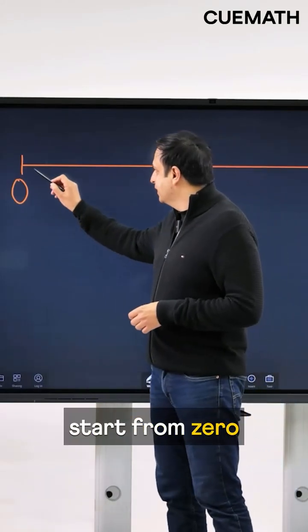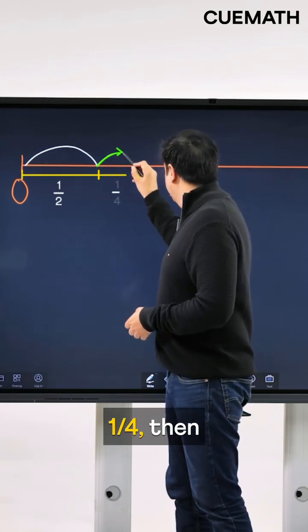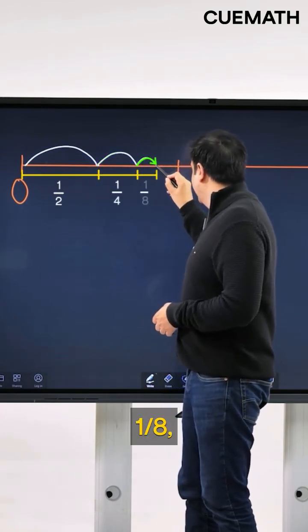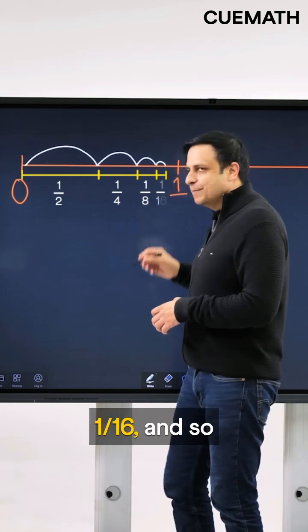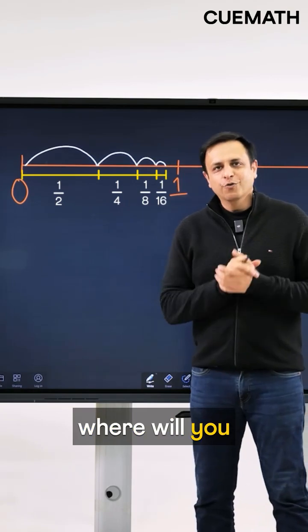On a number line, if you start from 0 and first make a jump of half, then a jump of 1 over 4, then a jump of 1 over 8, then a jump of 1 over 16, and so on for infinitely many times, where will you eventually get to?